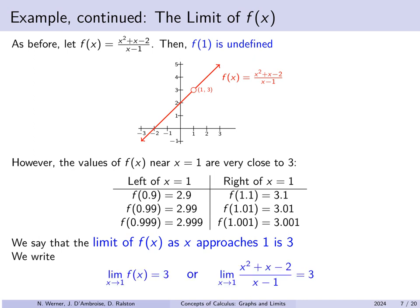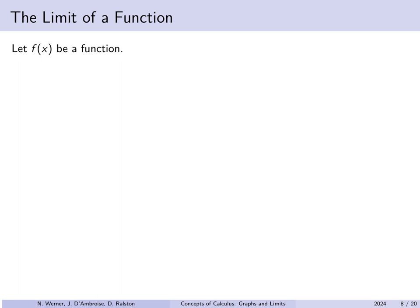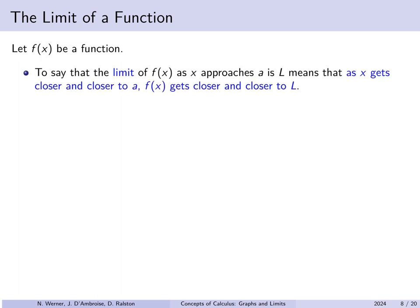We write this as: the limit as x approaches 1 of f of x equals 3. Or, because of what f of x is in this specific example, the limit as x approaches 1 of x squared plus x minus 2 over x minus 1 is equal to 3. In general, to say that the limit of f of x as x approaches a is the number l means: as x gets closer and closer to a, f of x gets closer and closer to l.